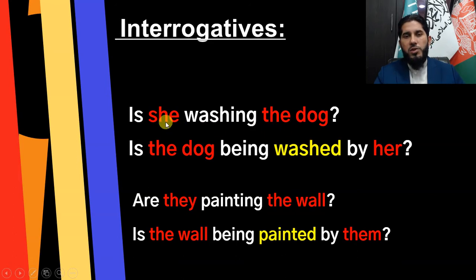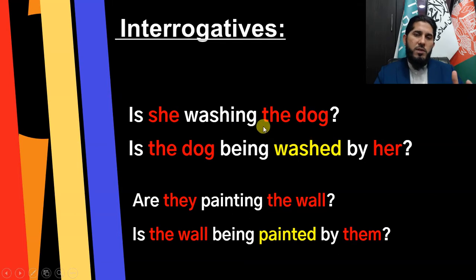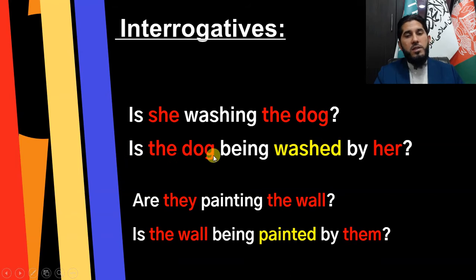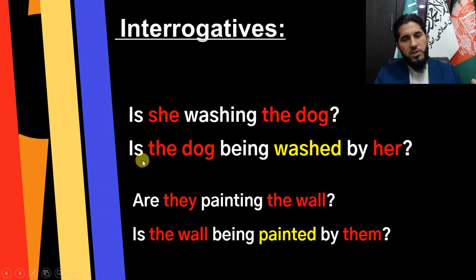For yes/no questions: 'Is she washing the dog?' Here 'she' is the subject — the doer of the action 'washing' — and 'the dog' is the receiver of this action. The object of the active sentence becomes the subject of the passive sentence, and the same to-be verb 'is' is used because 'dog' is a third person singular subject. So: 'Is she washing the dog?' becomes 'Is the dog being washed by her?'